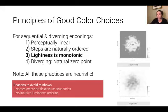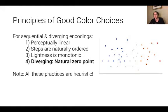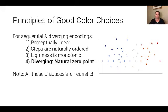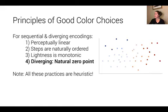Finally, when talking about diverging encodings, we want to make sure our data has a natural zero point. In the scatterplot here I have blues generally on the left and red points on the right. If you were to shift the values — say shift them down a little bit — what happens is that I could end up in a situation where I dramatically change the perceived structure of our data.